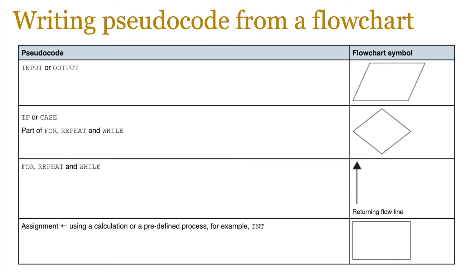You know how input or output in pseudocode refers to the parallelogram symbol. How a decision box is either an IF or a CASE statement. And it can also be part of a FOR REPEAT and WHILE loop. And when you're using a FOR REPEAT and WHILE loop, you're normally going to have a returning arrow which just goes from maybe a decision box back to another part of the program. And then you do something called an assignment which normally is that arrow in pseudocode. Normally when we try to assign a value to an identifier or a variable or we're trying to do some kind of calculation, we're going to be using this rectangular box which we normally call the process box basically. So that's equivalent to that arrow in pseudocode.